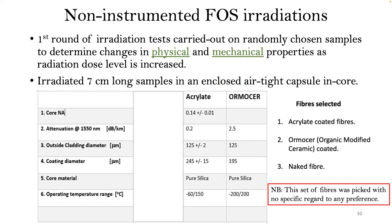We've already done a little bit of work and acquired some fibers. We carried out the first round of irradiation tests on randomly chosen samples to determine if there are any physical or mechanical changes in the fiber as you vary your dose level. We took small samples of seven centimeters long, put them in an airtight capsule, and placed them in the reactor core at Safari at NEXA. This set of fibers was picked with no specific regard to any preference — it was just to see how the systems would work — but now we are in the process of acquiring the right fibers.